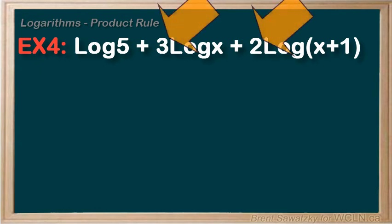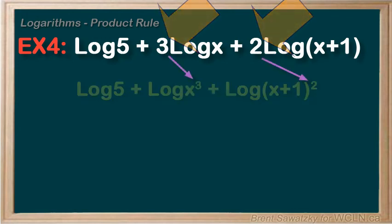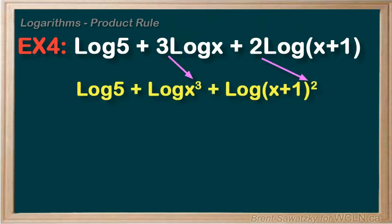First, these numbers in front of the logs here. Well, we remember back to our power rule and they could be converted into exponents. And now we would have log of 5 plus log of x to the 3 plus log of (x+1) to the power of 2, all base 10.